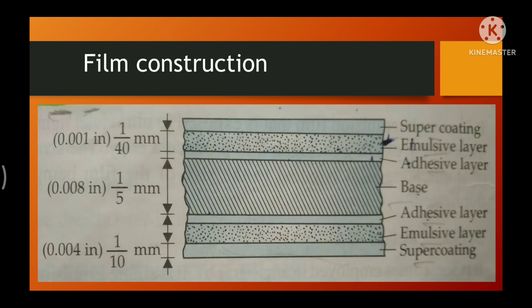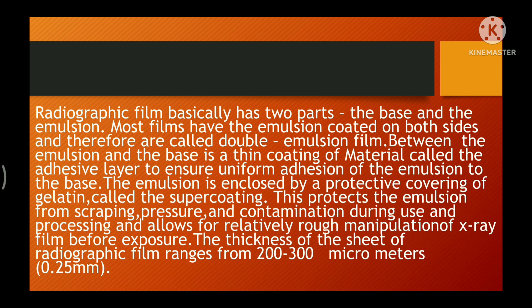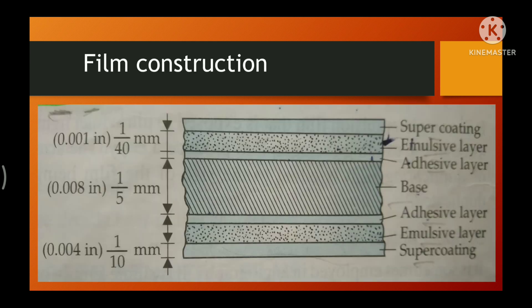Moving towards the proper construction of X-ray film, I have mentioned a diagram of film construction here. There is a supercoating, emulsion layer, adhesive layer, then base, and then again adhesive layer, emulsion layer, and supercoating. Radiographic film basically has two important parts — base and emulsion. Most films have emulsion coated on both sides; this film is called a double emulsion film because the emulsion is coated on both sides.